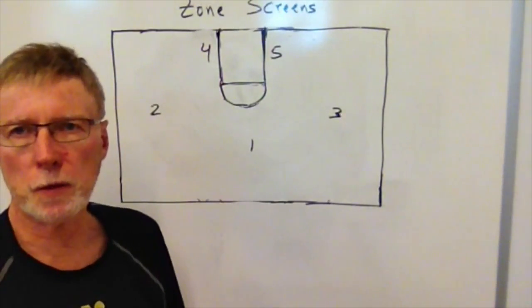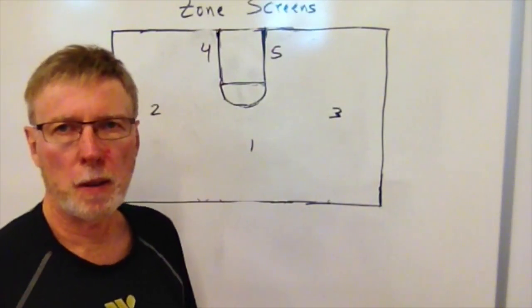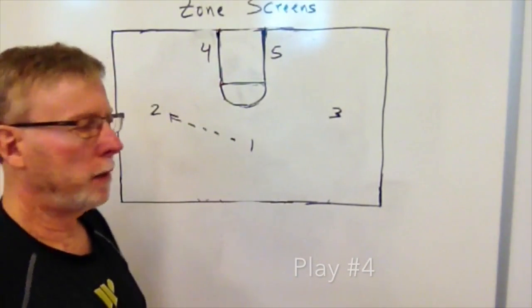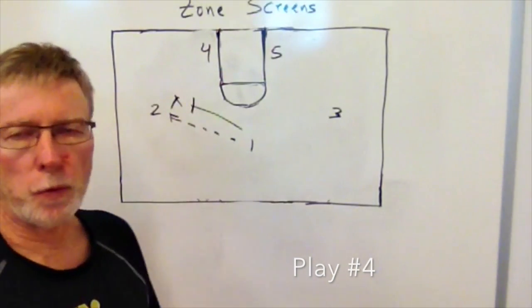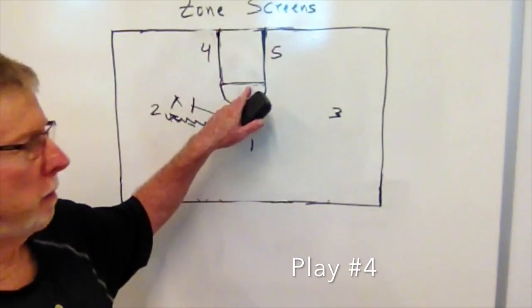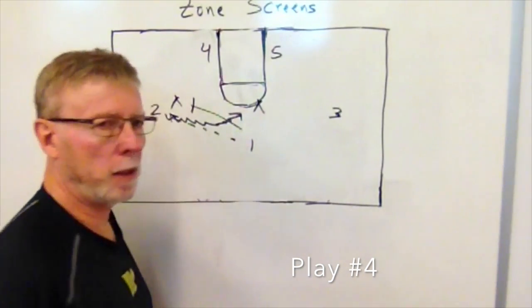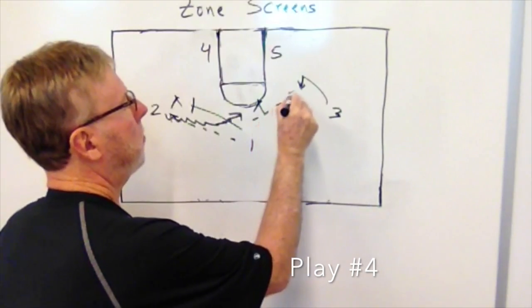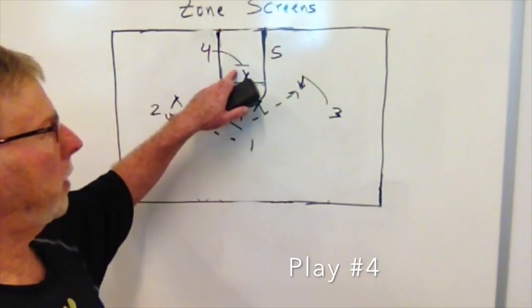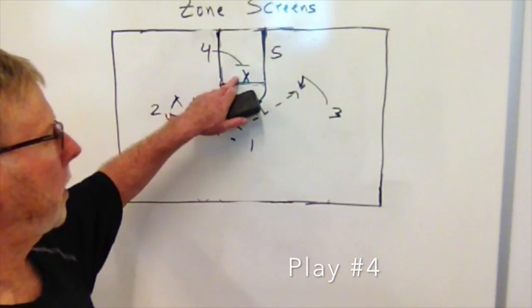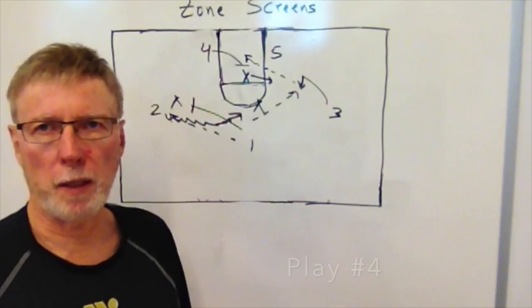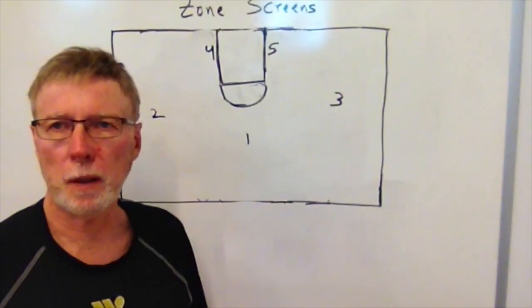Play number four potentially involves the four man, so he'll take a little different path. The play starts with the pass to the left, and the one man goes to set a screen for the two man. The two man initiates a hard dribble looking for a shot, hoping to draw the defense. The three man may be open for a shot, and the four man comes in and sets up a block in the middle of the zone. If a defender comes up to play defense, that's where the four man can get a pass from the three man. That's play number four.